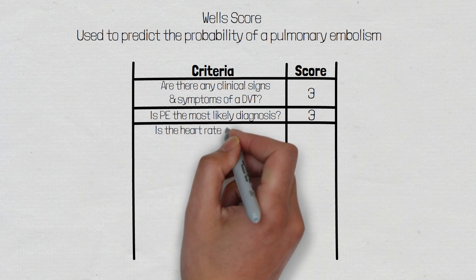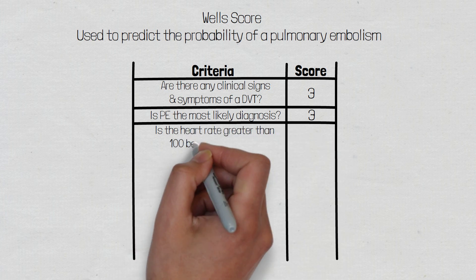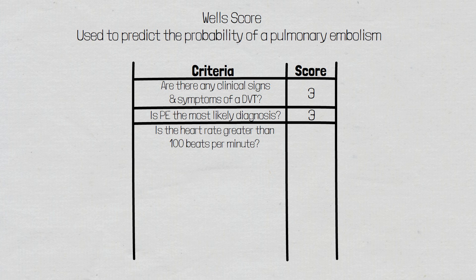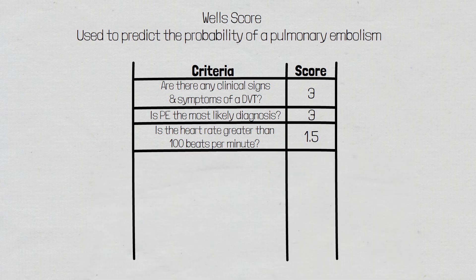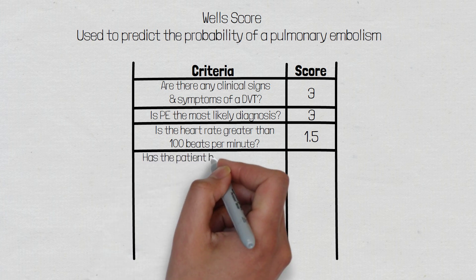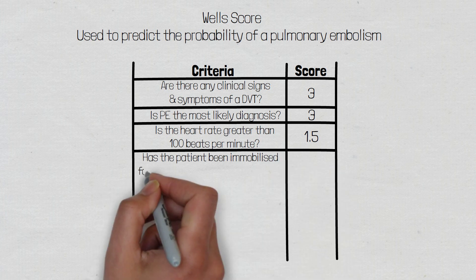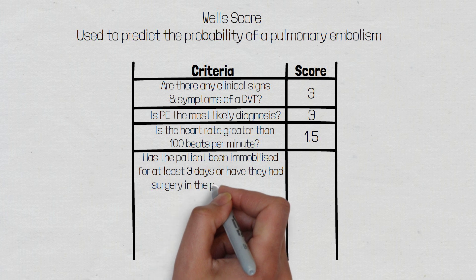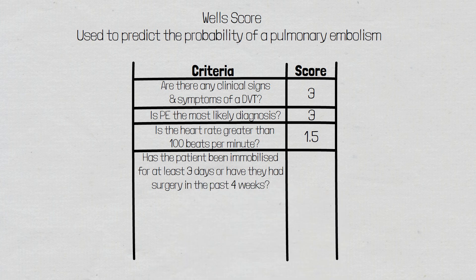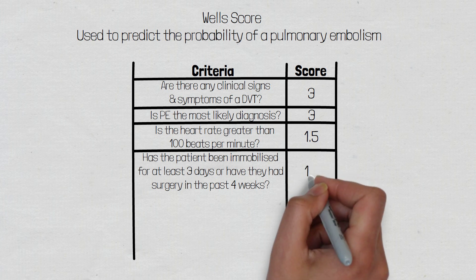Is the heart rate greater than 100 beats per minute? A yes scores 1.5, but it's important to remember that some patients won't present with a tachycardia, especially if they're elderly and on drugs such as beta blockers. The fourth question is: has the patient been immobilised for at least three days or have they had surgery in the past four weeks? These are both risk factors under Virchow's triad and a yes scores 1.5.